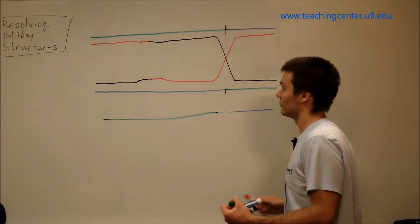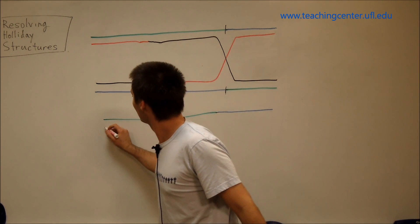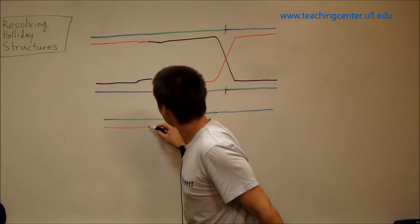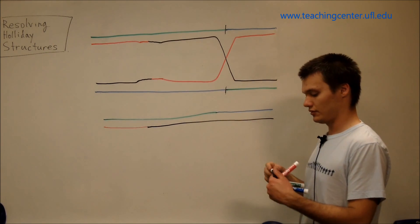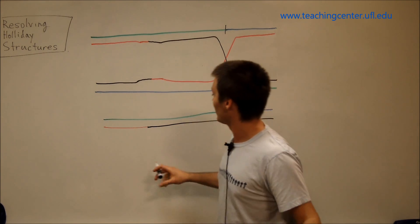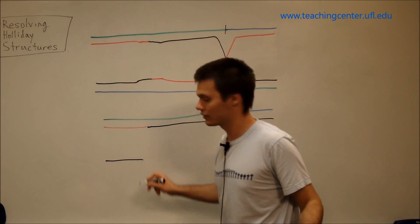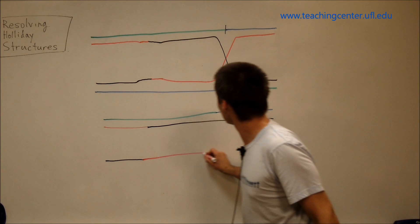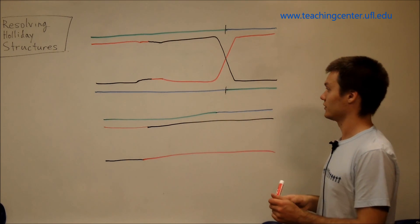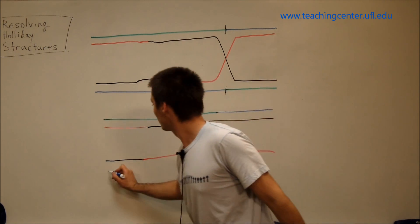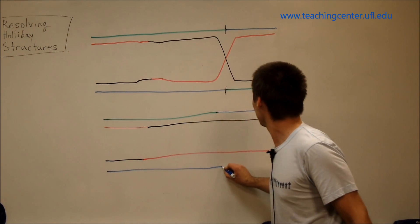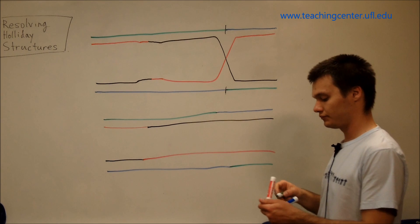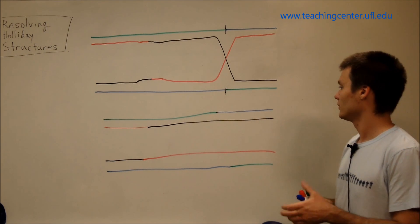And we have part of our red strand, base paired, and then this ends up being mostly our black strand. And then we have part of our black strand going into what is mostly red strand. And then we have blue strand going into green strand.